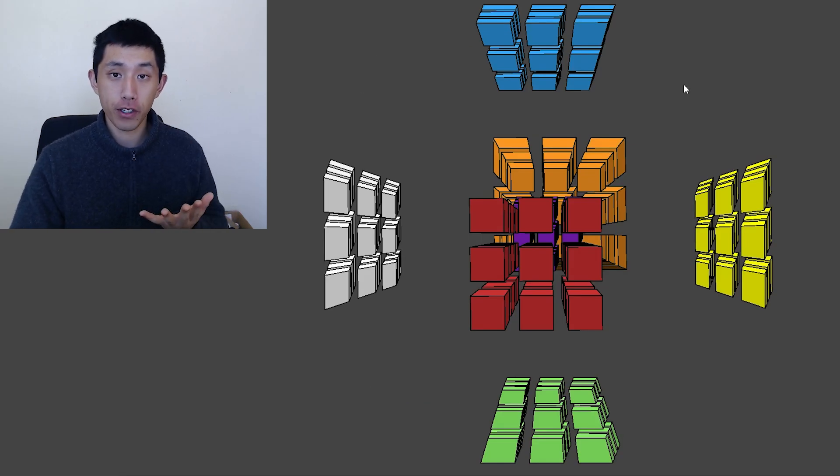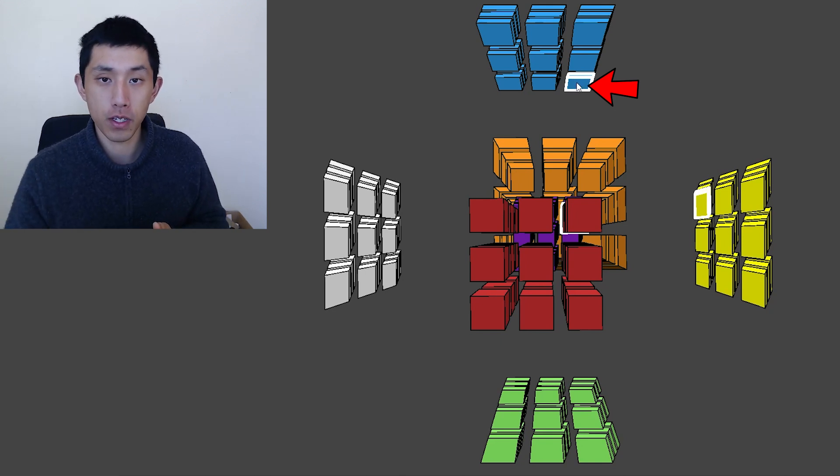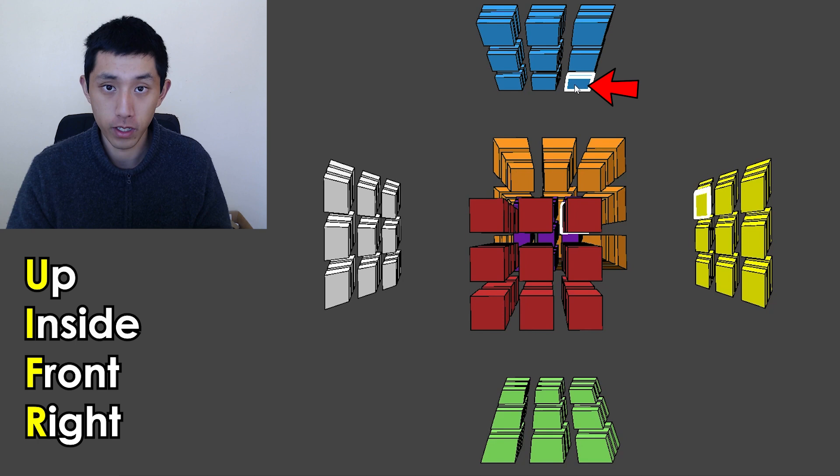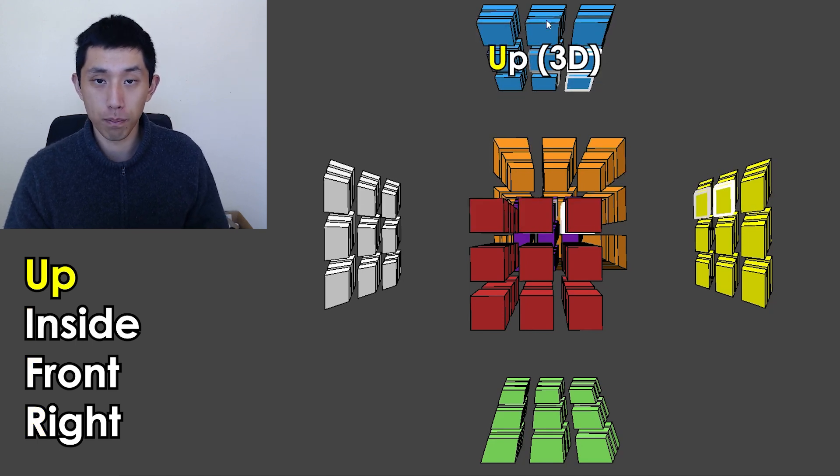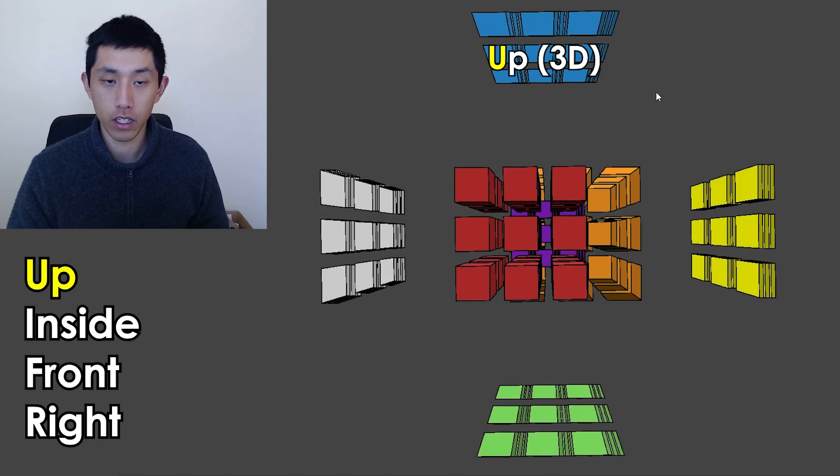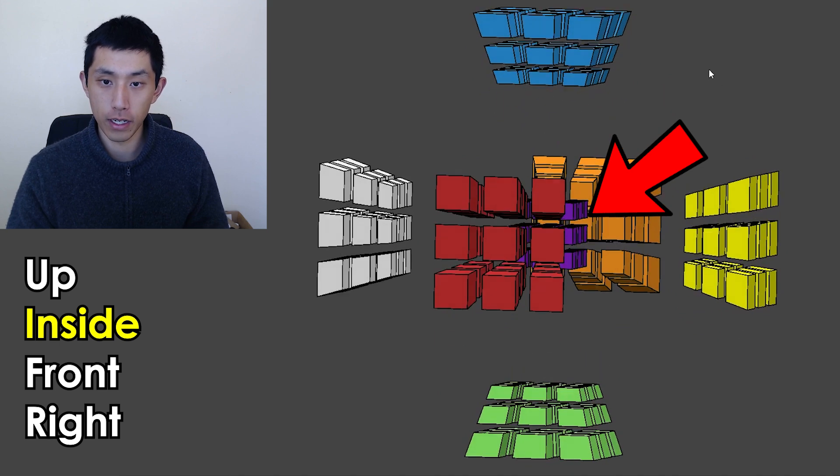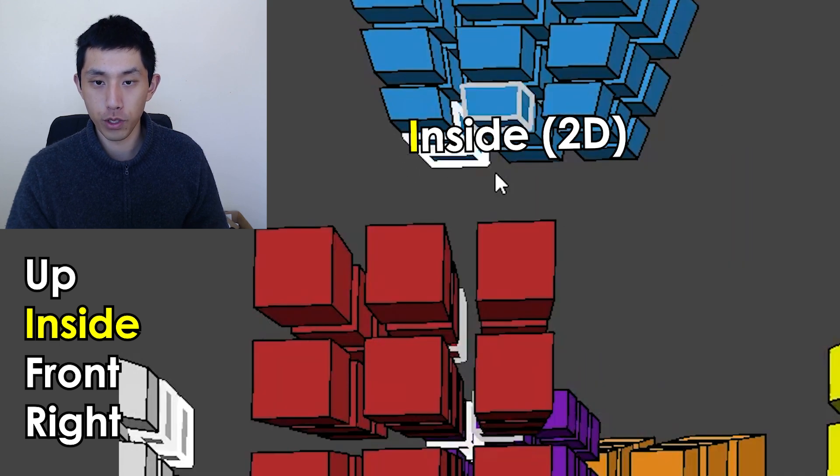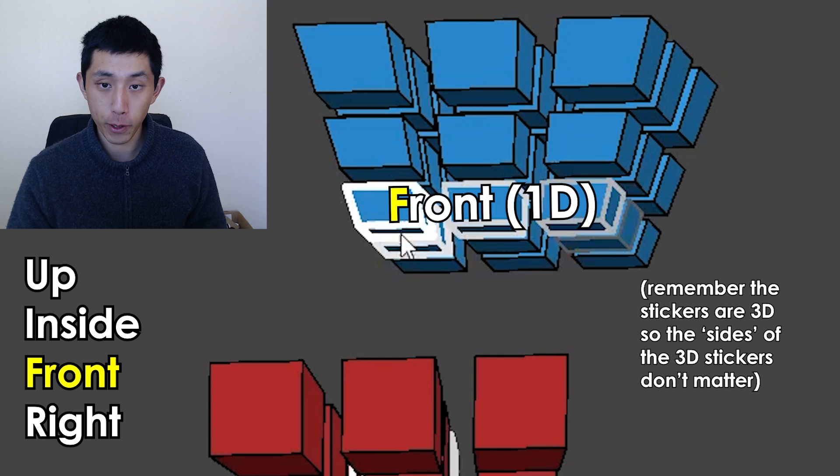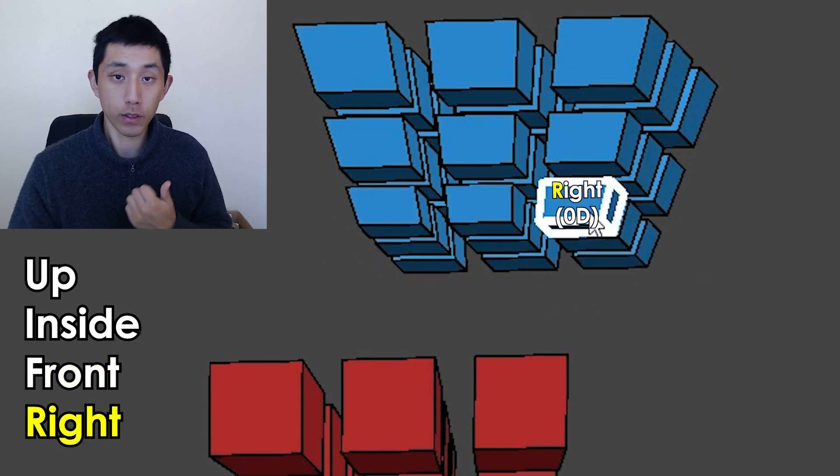To indicate the location of a sticker now, we need four coordinates. For instance, this sticker here, which is the equivalent of what we talked about in three dimensions, is the upper inside front right sticker. Upper because it's on the upper cell. Cell is just what we call sides in four dimensions. And then inside because we now have an additional inside cell here and its face. So talking about this 2D face facing the inside. And then front because we're talking about the front line of this face facing the inside, and then the right point of the front line once again.